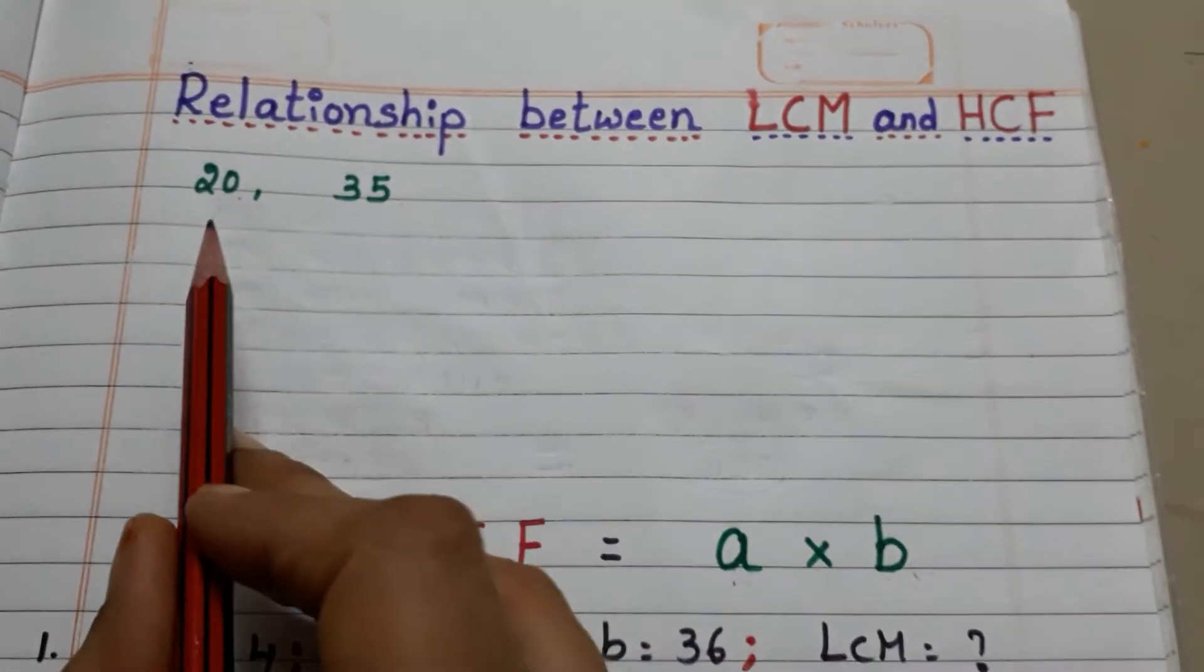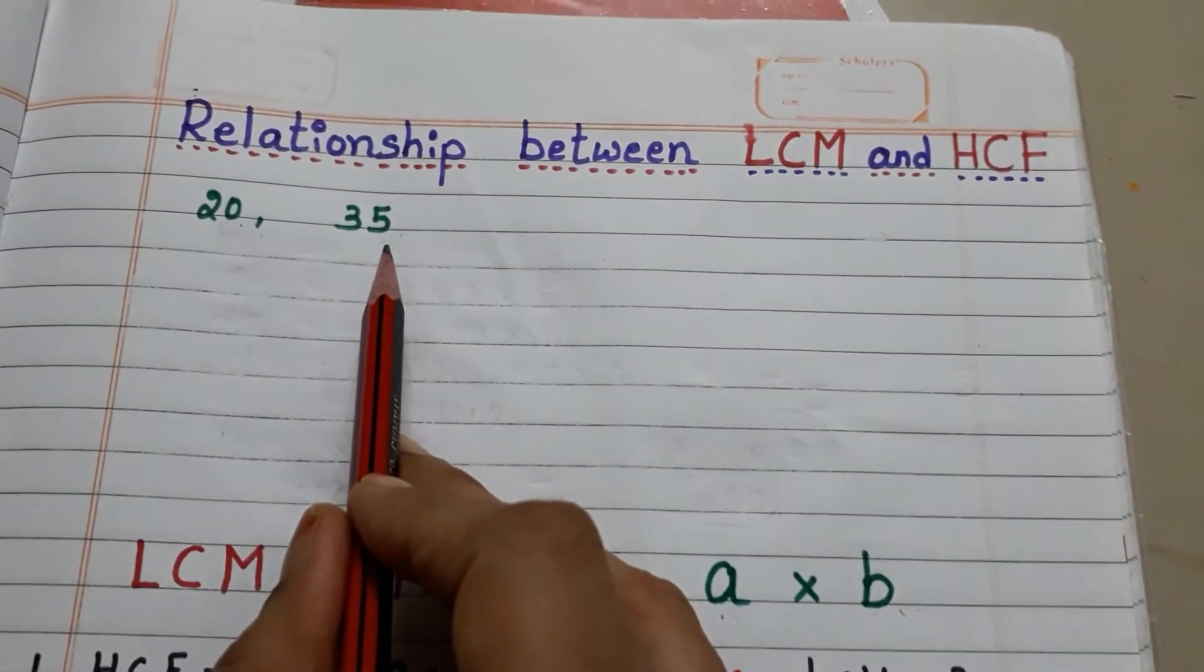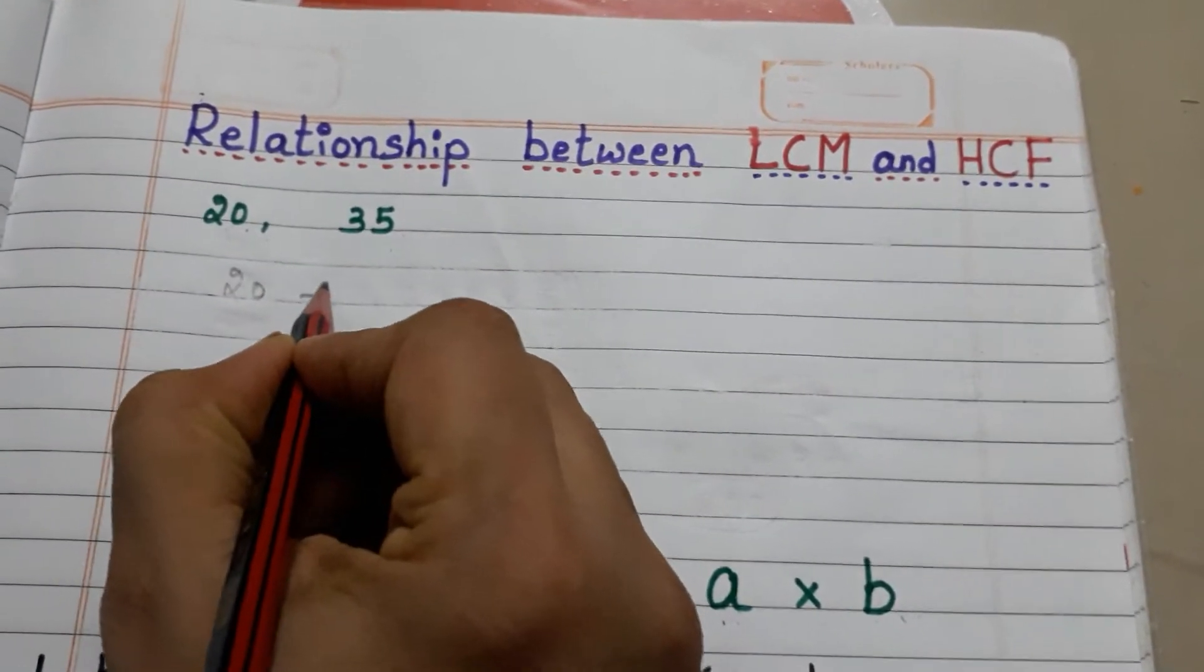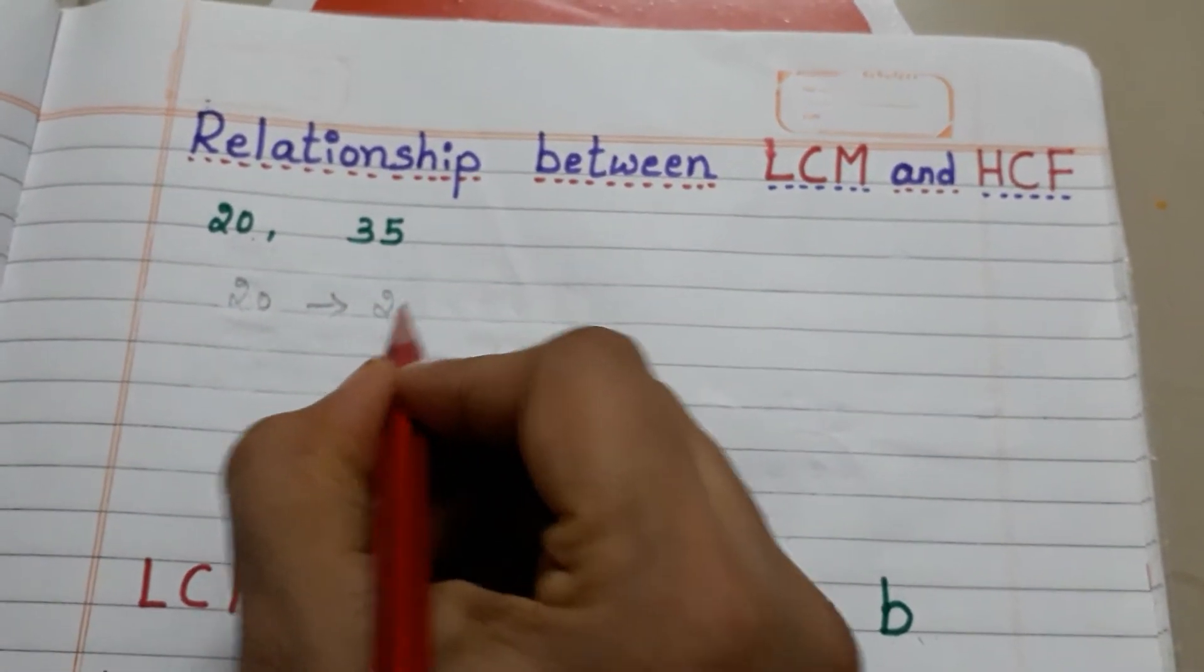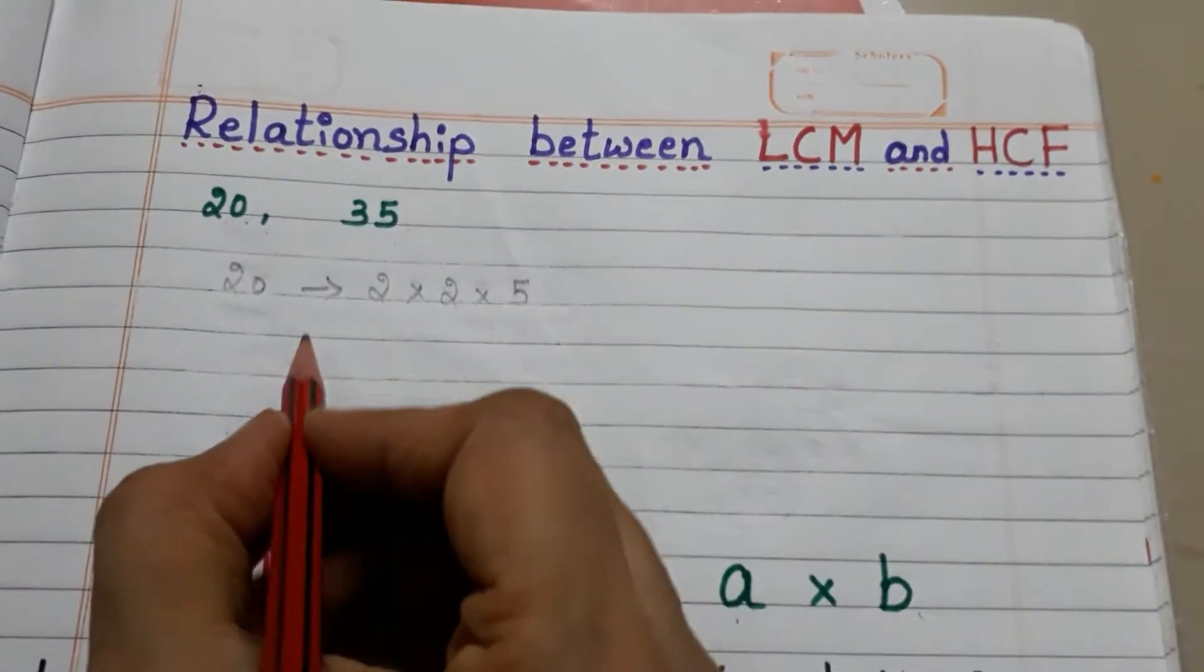Here we have two numbers 20 and 35. For these two numbers we have to find LCM and HCF. First you take the number 20 and we can write 20 as 2 into 2 into 5. Now take the number 35. We can write 35 as 7 into 5.